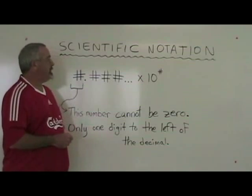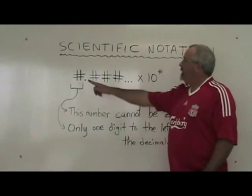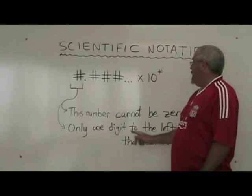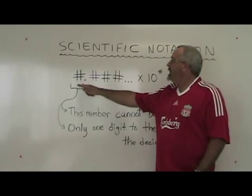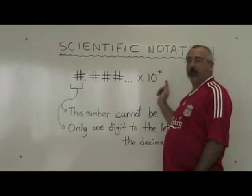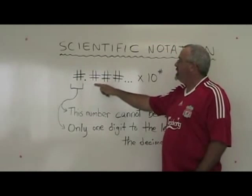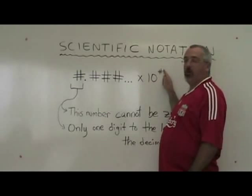The rules of scientific notation are that the first number cannot be zero, and that there is only one digit to the left of the decimal. Therefore, scientific notation numbers will always have a form like this: one digit, followed by the decimal, followed by several more digits, and then you multiply by ten to the power of another number.